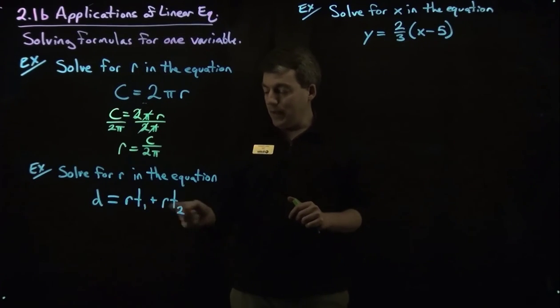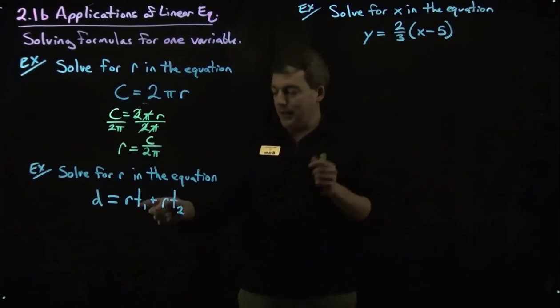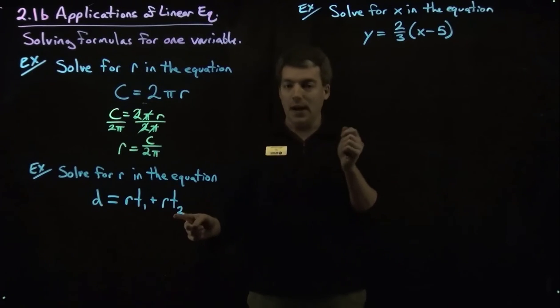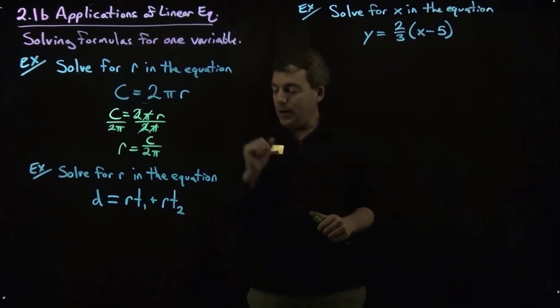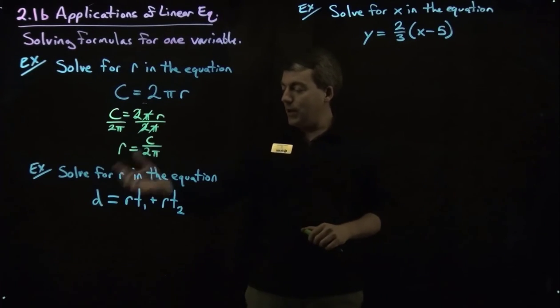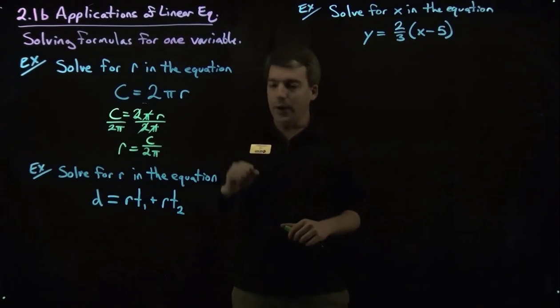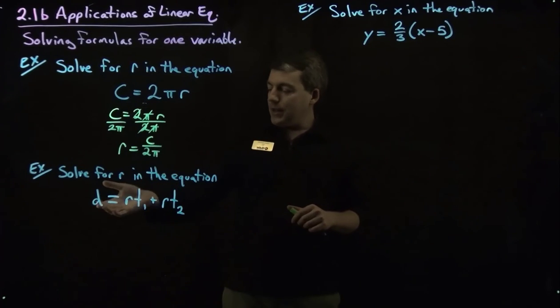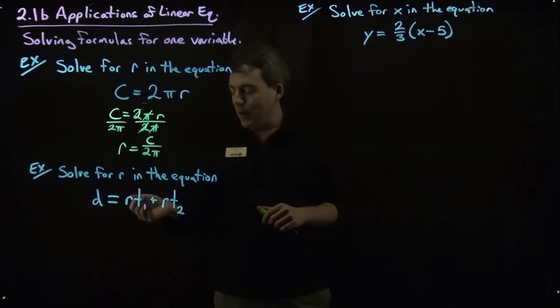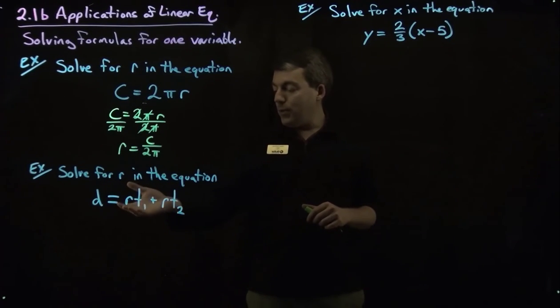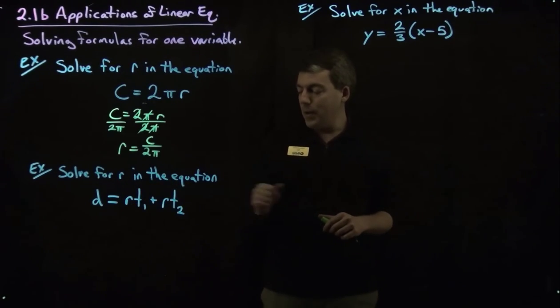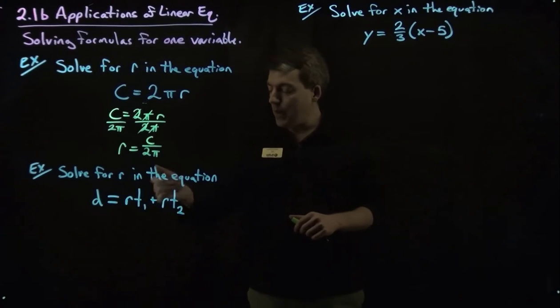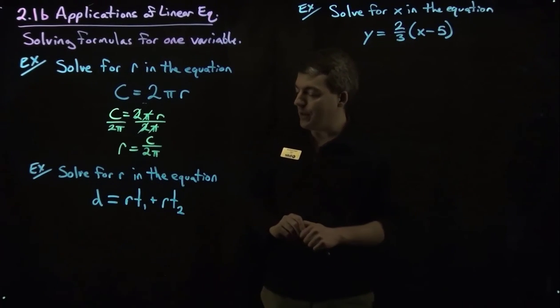You can think of them as these little t's are waving little flags. This says I'm 1, this one is saying I'm 2. So this might be a time 1 and a time 2 later. So this particular equation could represent the distance something travels after moving at this r for a certain amount of time and the same r for another amount of time. Distance equals r times time for two different times here.